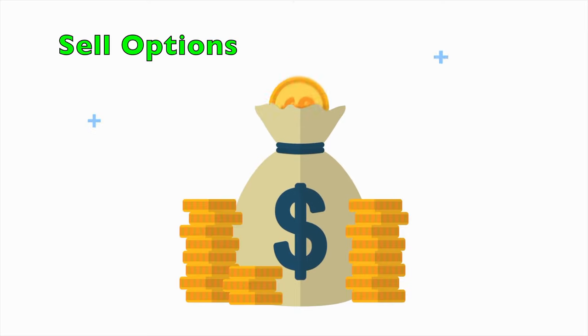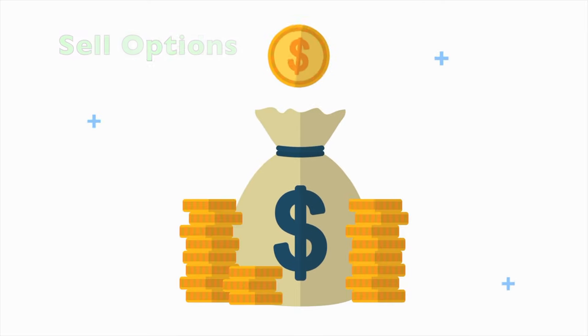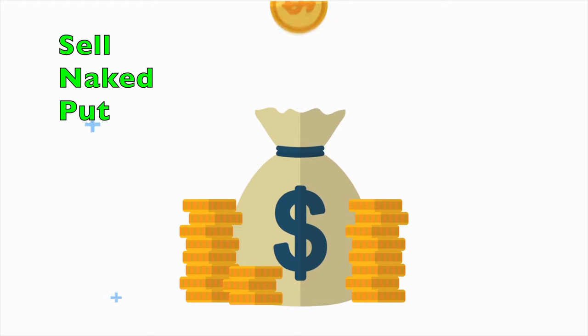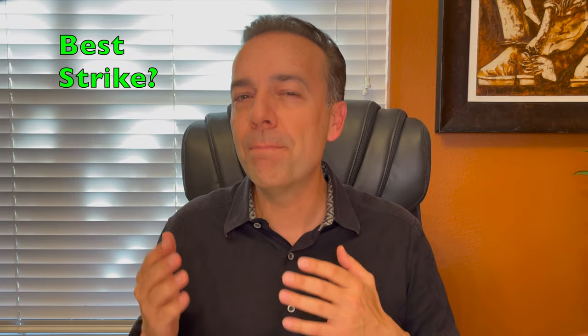As you know, if you've been watching my channel for a while, I predominantly like to sell options. My favorite strategy is to sell a naked put option. So how do you go about picking the best option strike price to sell these options at?